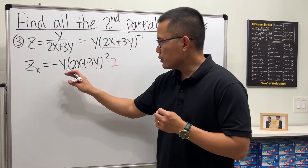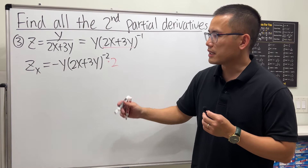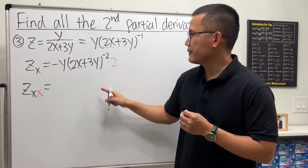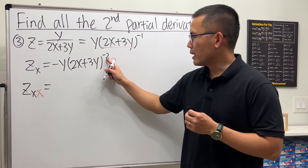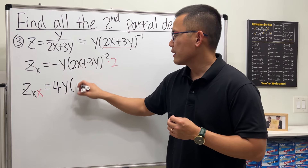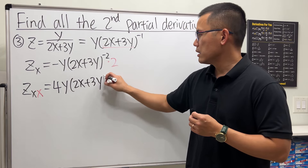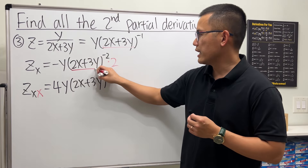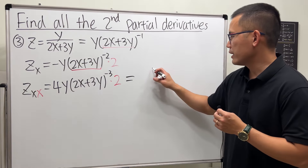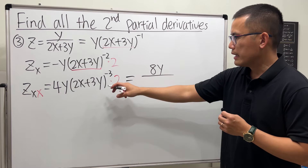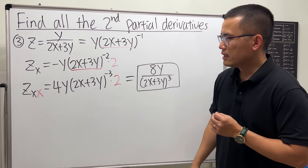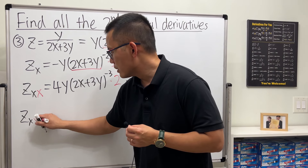Taking advantage of this expression, let's differentiate zx with respect to x again to get zxx. X only appears in (2x + 3y), so put the power to the front: negative 2 times 2 gives 4, the y stays, and the power becomes negative 3. Applying the chain rule we multiply by another 2. Cleaning up, zxx equals 8y over (2x + 3y) to the third power.